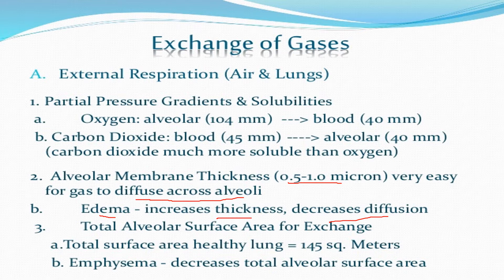The total alveolar surface area for gas exchange in a healthy human is 145 square meters. In emphysema, there is a decrease in the total alveolar surface area, which again causes impairment in gas transportation.